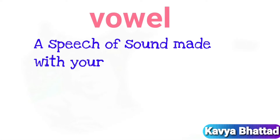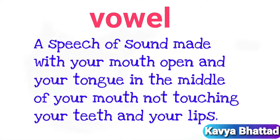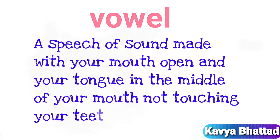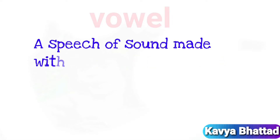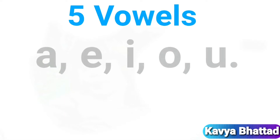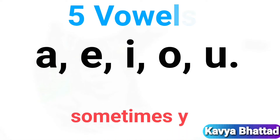Do you know what a vowel is? A vowel is a speech sound made with your mouth open and your tongue in the middle of your mouth, not touching your teeth and your lips. There are five vowels: A, E, I, O, U, and sometimes Y.